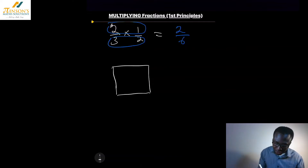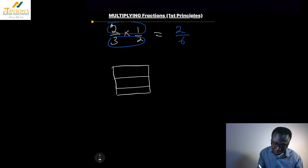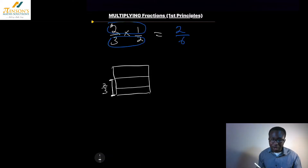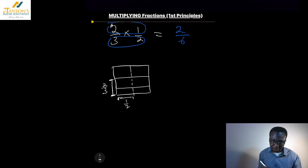We're going to look at two thirds. So if you go across this way and split this into thirds — it might not be perfect, but it helps us understand. So I've got my two thirds from there to there. That's two thirds. Now I want to have one half going the other way. So I'm going to split this into a half — that is where my half is, from there to there.